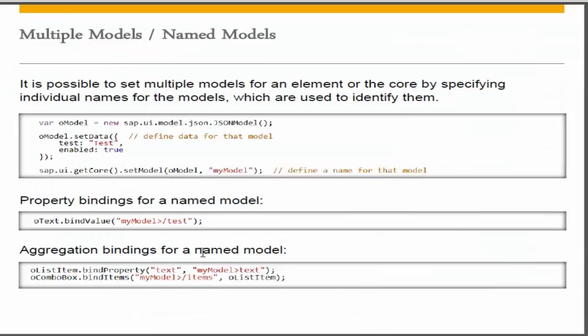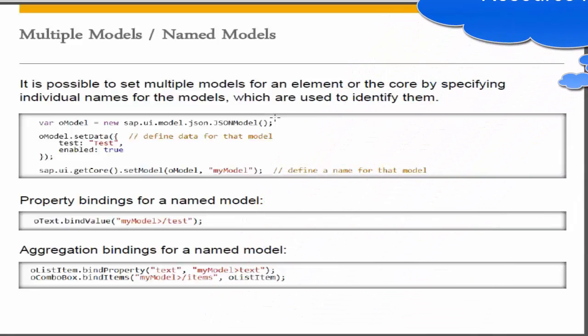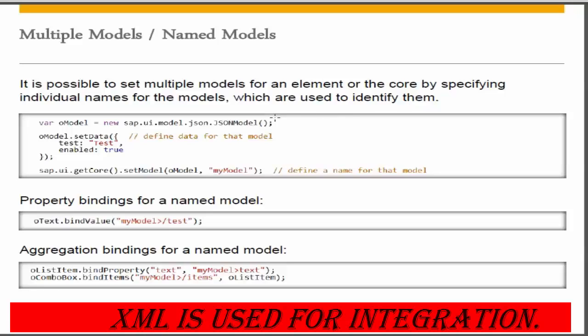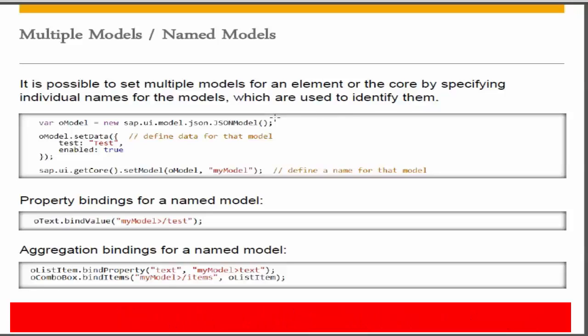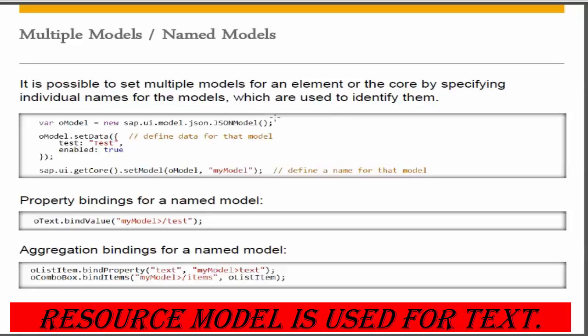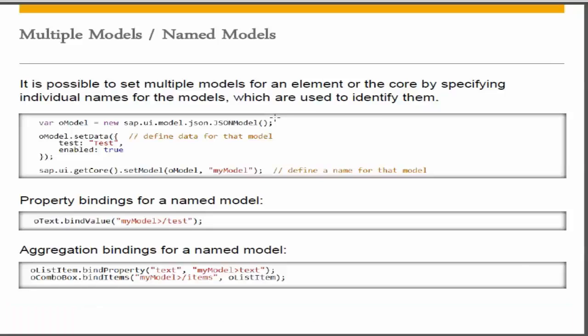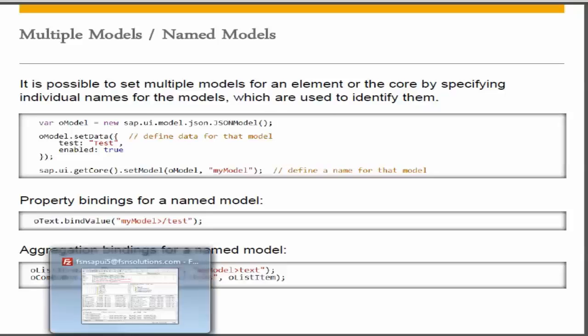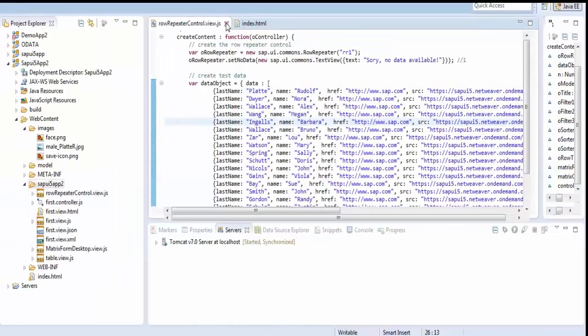We will be seeing the resource model and XML data — how XML will work. XML is used normally for integration, and the resource model is used for text display. For example, if you have developed an application in the US and you want to open it in Germany, then localization can affect and display the text in the local language. We maintain that in the resource model.